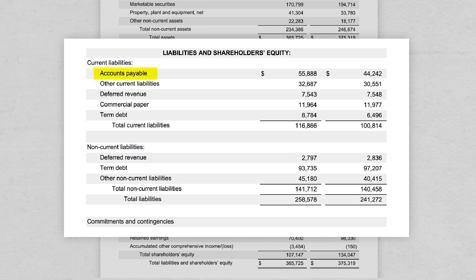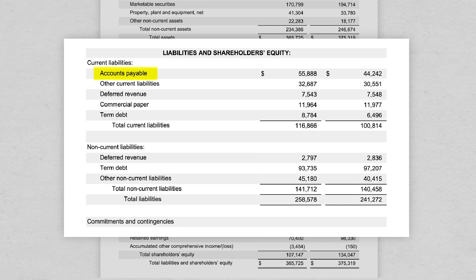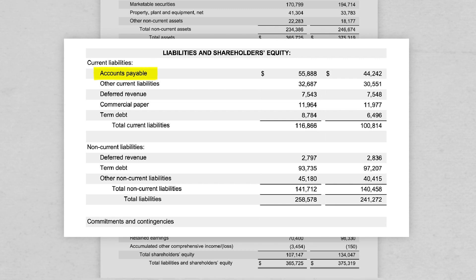Accounts payable is the first line item. This is the amount of unpaid bills that we have. So we've received all these products and services to help operate the business, but we have not yet paid for these things. So we owe this money to our vendors and our suppliers.